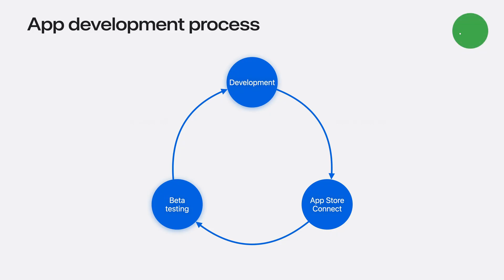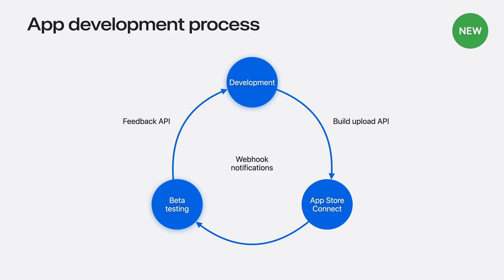The new App Store Connect APIs allow you to automate this loop, enabling much faster iteration. This year, App Store Connect is introducing Build Upload API and Feedback API to support better automation. On top of that, App Store Connect is now supporting Webhook notifications. Your system can get notified when something happens on your app and react to those events.